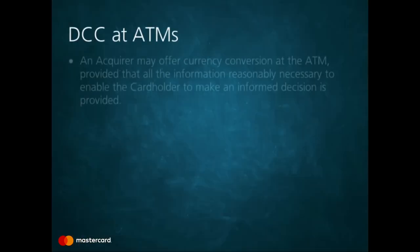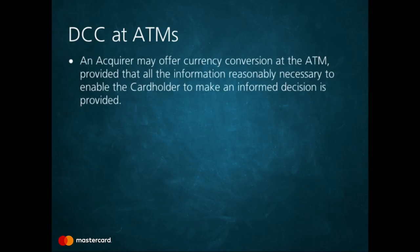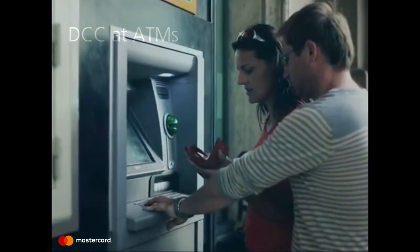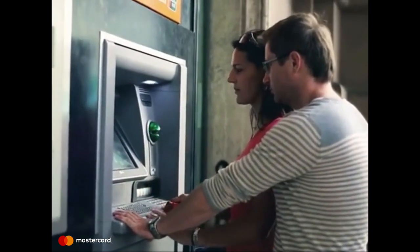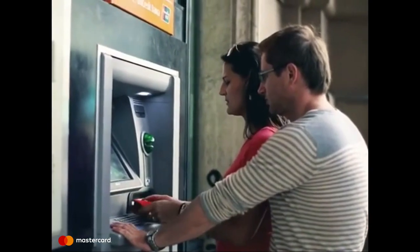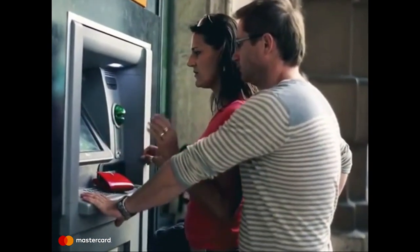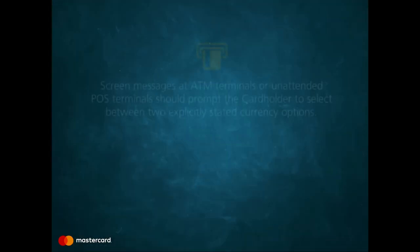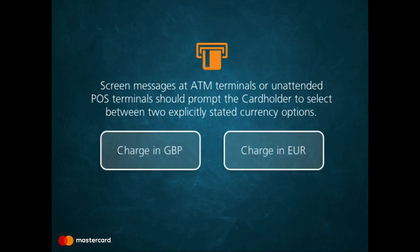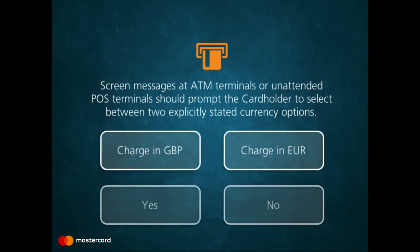In addition to POS terminals, an ATM acquirer may also decide to offer DCC services to cardholders at ATMs. The MasterCard standards for DCC at ATMs are similar to the requirements for DCC at merchants. The ATM screen must provide the cardholder with all of the information reasonably necessary to make an informed decision. This information includes the currency exchange rate and the withdrawal amounts in both the home and local currencies. Screen messages at ATMs or unattended POS terminals should prompt the cardholder to select between two explicitly stated currency options, such as between British pounds or euros, and not between a yes or no answer option. Offering only yes or no answer options is an indirect choice measure and is prohibited by MasterCard.